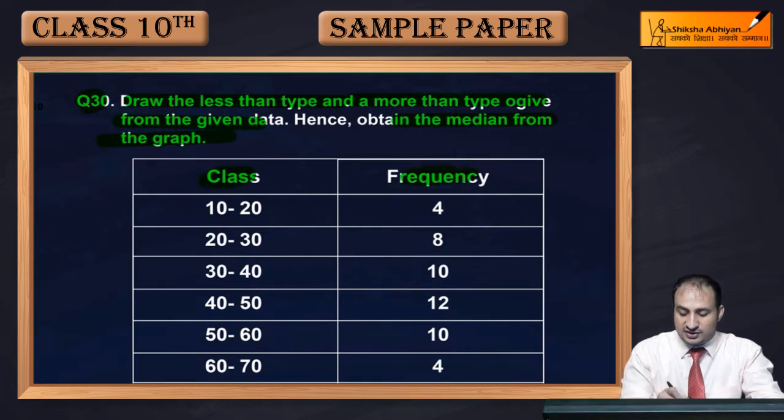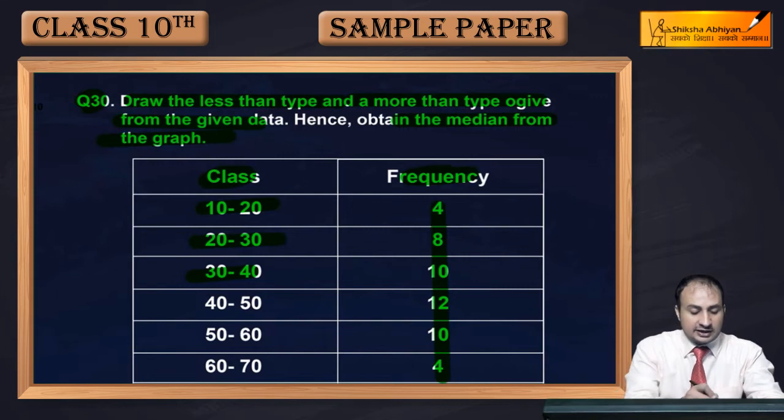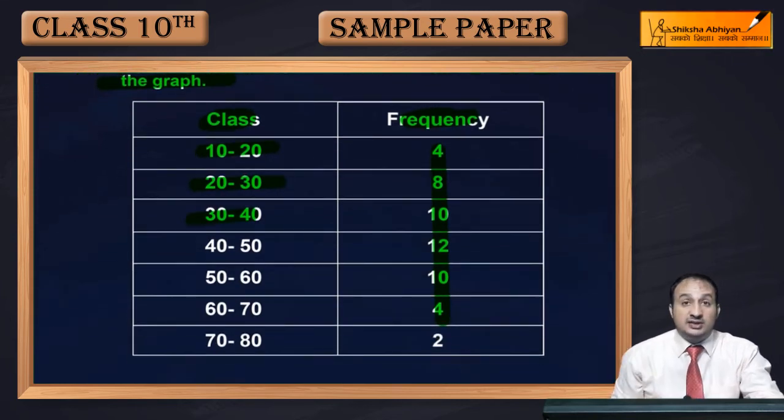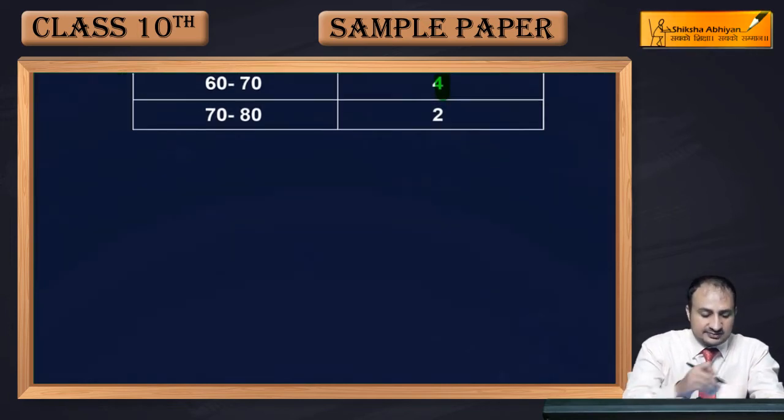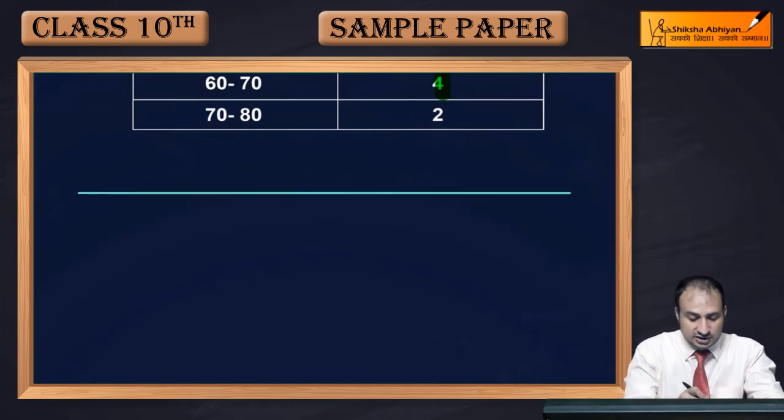First of all, class frequency is given to you: 10 to 20, 20 to 30, and so on, and their respective frequencies are given. So first of all, less than type and more than type cumulative frequency table you will make. For this, we will make it here. First of all, what I will do here is I will take lines which I will need.